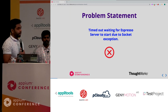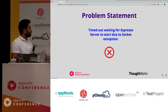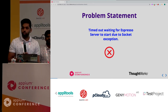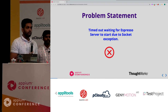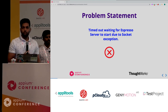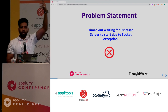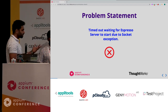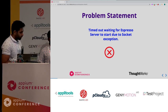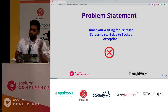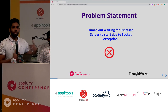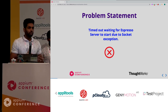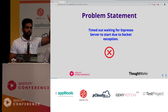I always like to start with a problem statement, because I like problems. Yesterday, when we were part of the advanced APM workshop, we had an awesome bunch of people in the room. Some of them actually bumped into this crazy error saying 'socket exception'. And even people who were not there - how many of you have bumped into this exception when working in your projects? You try to execute, and nothing happens, and all you see is a socket exception.